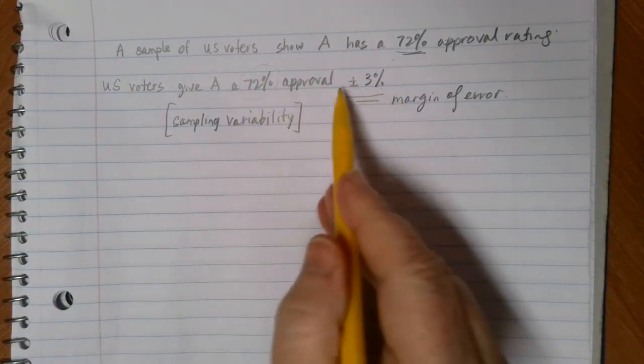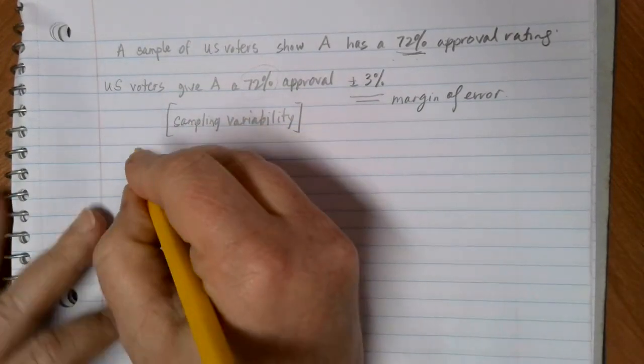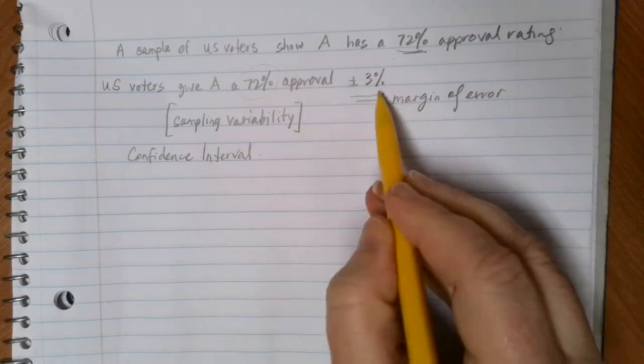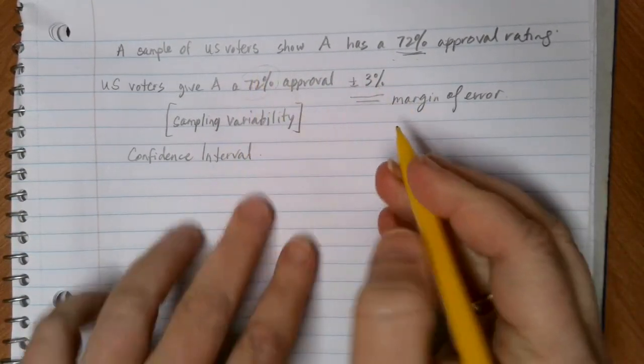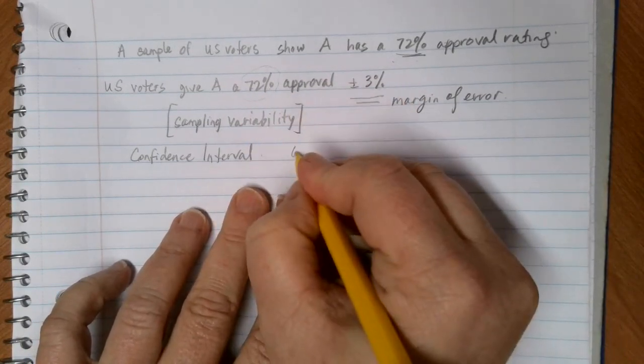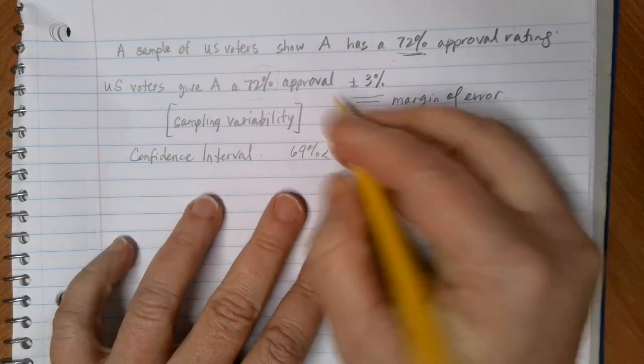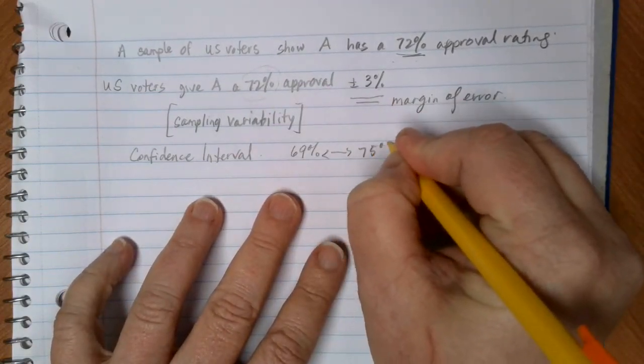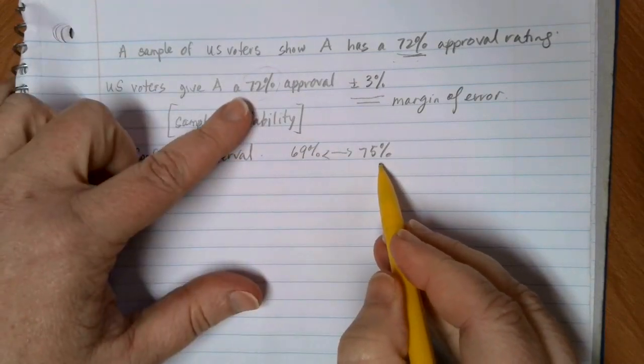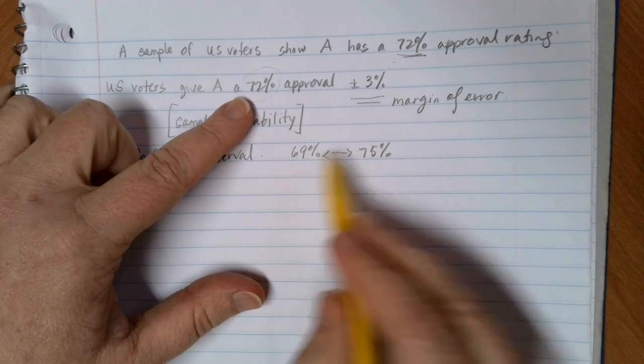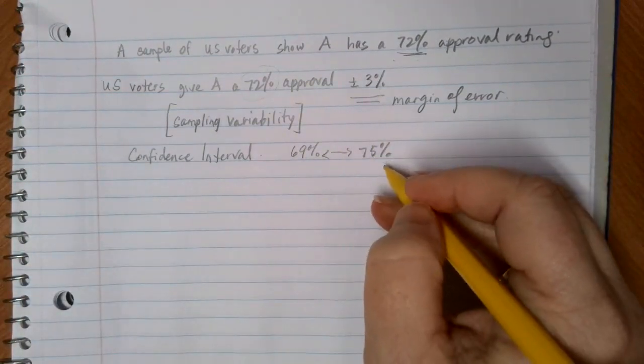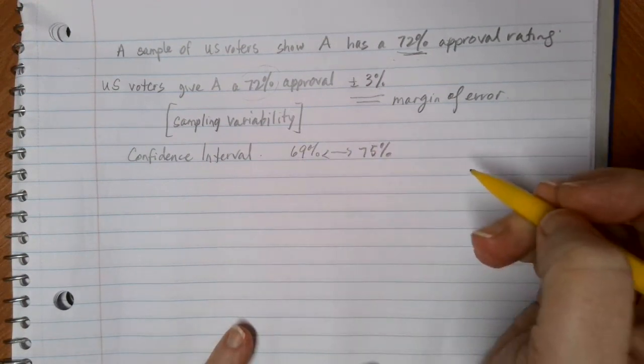Another way that you may see this written is as a range of values, and we call this a confidence interval. A confidence interval is giving us the variability that's predicted with my statistic. So if I'm plus or minus 3%, that means on the low end I could subtract 3% and get 69%, or I could add 3% on the upper end and get 75%. Somewhere in here, I'm expecting the actual voting approval rate to lie. I'm able to estimate the parameter fairly well within this range.